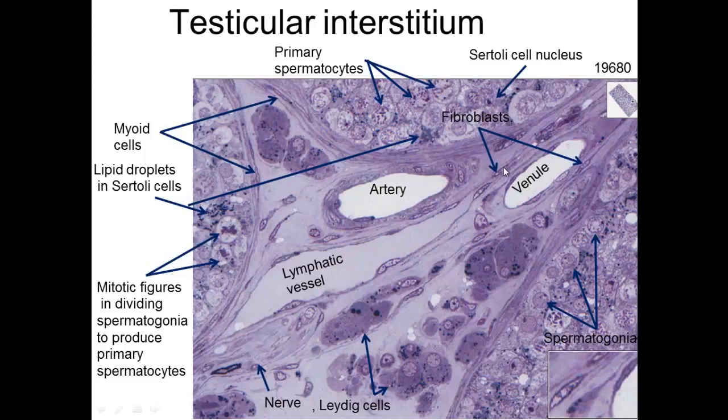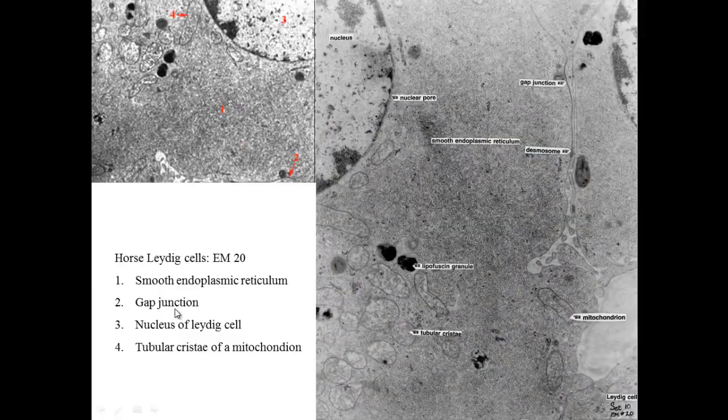Lymphatic artery, you've got fibroblasts, primary spermatocytes, myoid cells, mitotic figures of spermatogonia give rise to spermatocytes.